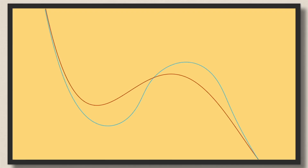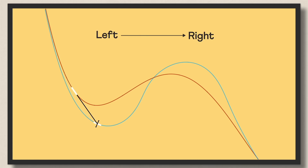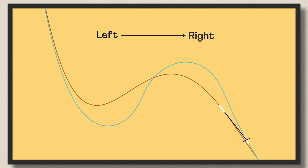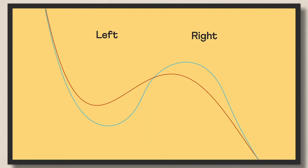But how did he figure out the direction? Let's assume the bike moving in a particular direction — say left to right. This is how it will move. And what if we assume the opposite direction, right to left? This is how the bike will move now.